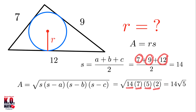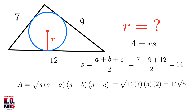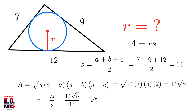We can simplify this: 7 times 2 equals 14, giving us 14 squared under the root, so the area simplifies to 14 square root of 5. Using the relationship A equals r times s, we get r equals A over s, which is 14 square root of 5 over 14. Therefore the inradius is equal to square root of 5.